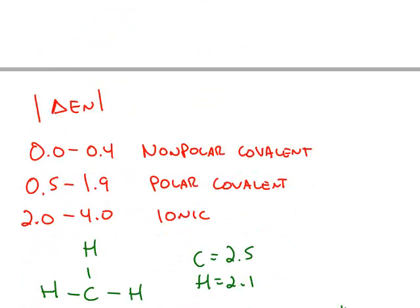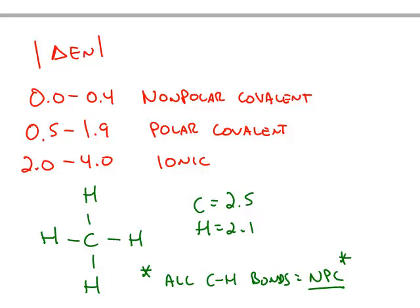1.9 falls at the upper range of what's called the polar covalent bonds. Nonpolar covalent means the electrons are completely equally shared, for example, between two hydrogen atoms. Neither one pulls on the electrons more strongly than the other.